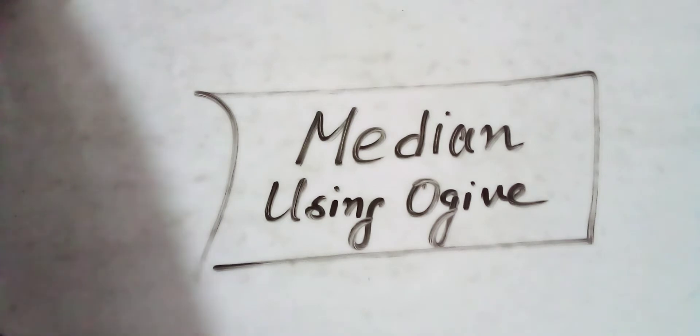First things first, what is an ogive? An ogive is a graph that represents the frequency distribution or cumulative frequency of a variable. Using an ogive, we can find partition values like the first quartile, median, and third quartile.